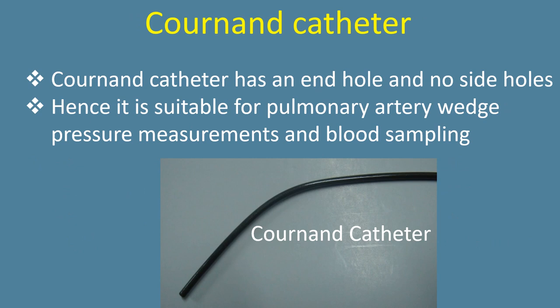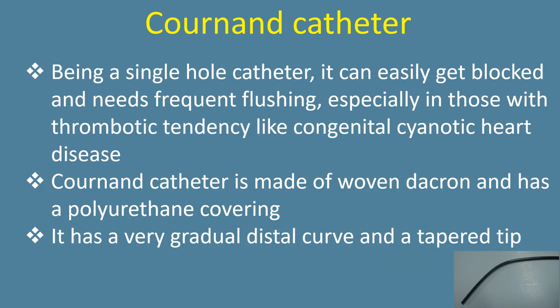The Cournand catheter has an end hole and no side holes, making it suitable for pulmonary artery wedge pressure measurements and blood sampling. Being a single-hole catheter, it can easily get blocked and needs frequent flushing, especially in those with thrombotic tendency like congenital cyanotic heart disease.